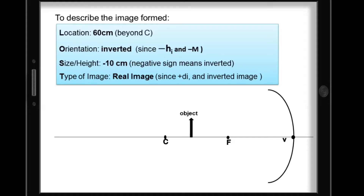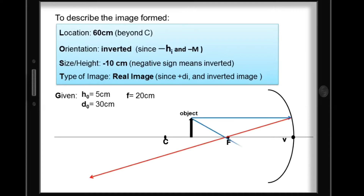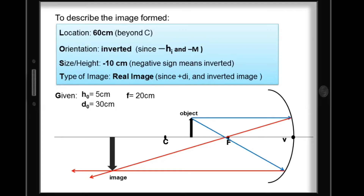Let's support our answer using the graphical method. The given: height of object 5 cm, distance of object 30 cm, focal length 20 cm. Using the principal rays — the PF ray and the FP ray — notice the merging of the reflected rays in front of the concave mirror. It's confirmed that the image is inverted, enlarged, and a real image.